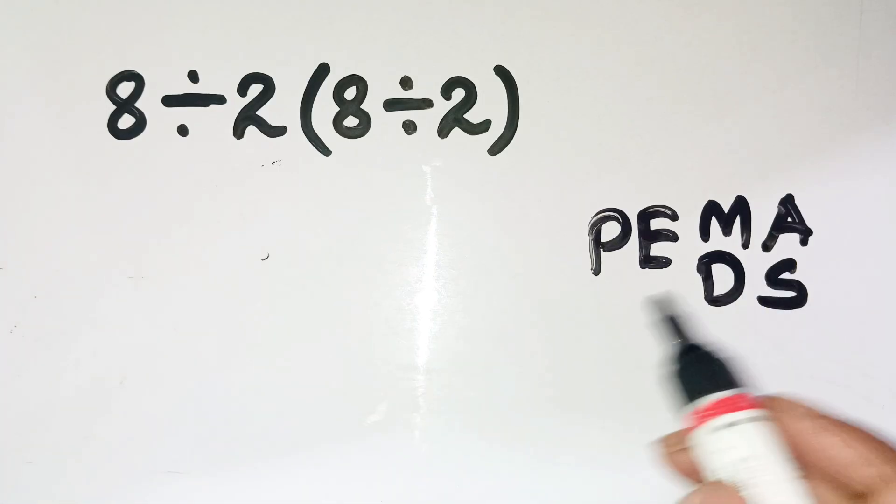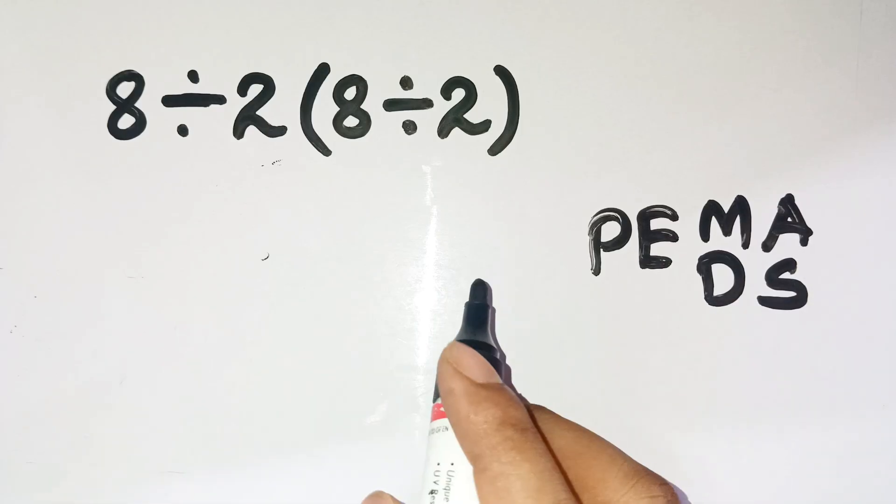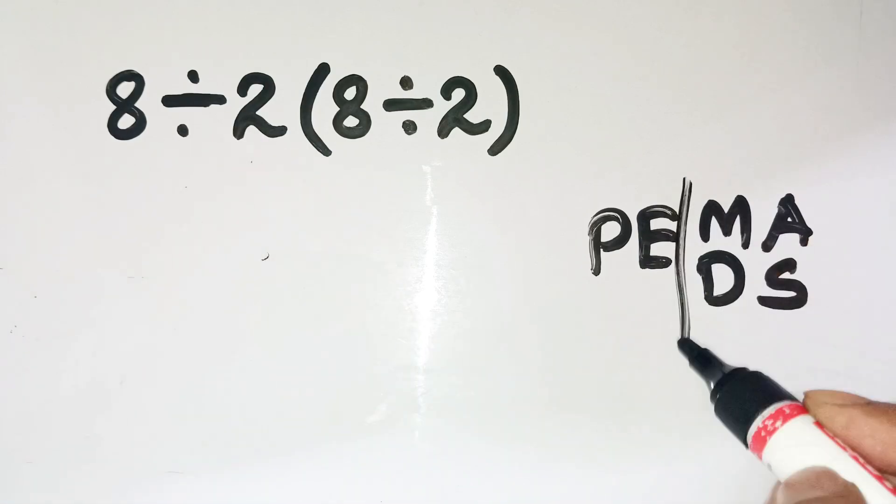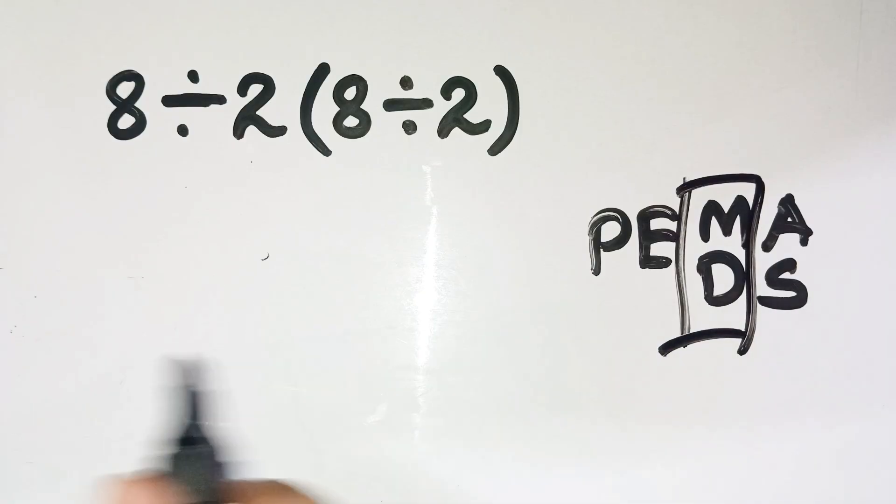PEMDAS stands for parentheses, exponents, multiplication, division, addition, and subtraction. It tells us what to do first, but here's the part most people miss. Multiplication and division are on the same level. They share equal priority, and we always move from left to right when both appear. So let's carefully apply that.